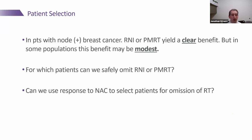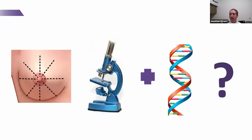So where does that leave us? Regional nodal irradiation yields a clear but sometimes modest benefit. How can we identify these populations when clinical pathologic variables don't work? Well, our medical oncology colleagues have been giving chemotherapy before surgery in a lot of patients. At first, as radiation oncologists, we panicked — we said we're going to lose pathologic information, we won't know how many nodes were positive. But we gained something more valuable: we learned about biology. We learned about the response to chemotherapy. Can we incorporate that?